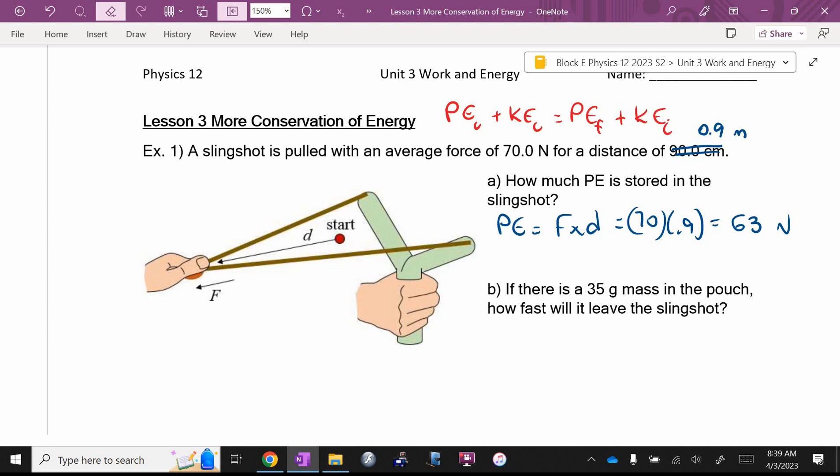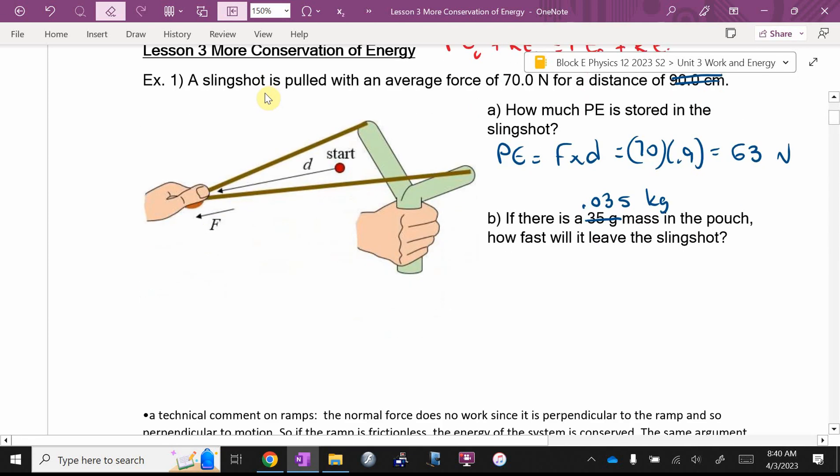You store energy by doing work equals force times distance, and then when you let go, Fahim, what does that energy turn into? What type? Yeah. Yeah, so it says, if there is a 35 gram, nice try, Mr. Duick, 0.035 kilograms mass in the pouch, how fast will it leave the slingshot? I could do a full conservation of energy, but I think what we can just say here, Brandon, is that 63 joules, that turns into kinetic. Okay.